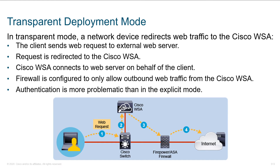The transparent deployment mode is pretty neat if you enjoy working with packets and creating rules. In transparent mode, the network device is responsible for redirecting web traffic. This is useful because people might reinstall their operating system, change browsers, or bring other devices to work. All of those devices just pass regular traffic, and when we see port 80 or port 443, we say these traffic flows need to be punted over to the WSA. Then, of course, we have our rules configured on the WSA for how to regulate those traffic flows.